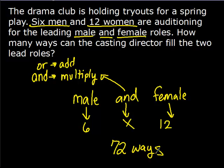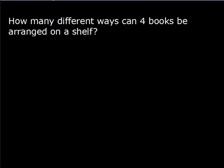So there are 72 ways for the casting director to fill the two lead roles. Our last problem for today reads: how many different ways can four books be arranged on a shelf?